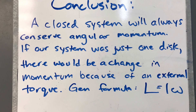We did a shared conclusion for this lab, and everyone will write down the same thing: a closed system will always conserve angular momentum. If our system was just one disk, there would be a change in momentum because it would experience an external torque. The general formula is L equals I omega. The main idea is that if our system is large enough to include both disks, then all the torques and forces from the collision are internal, so momentum is conserved. But if we define our system as just one disk alone, then the net external torque comes from outside the system and would change that momentum. That's the law of conservation at work.